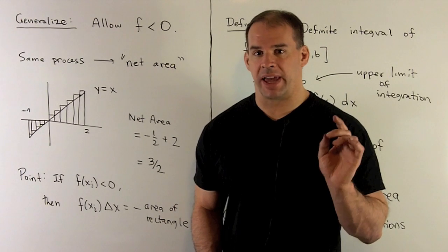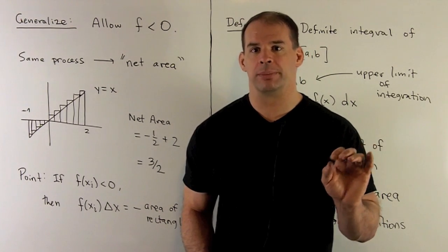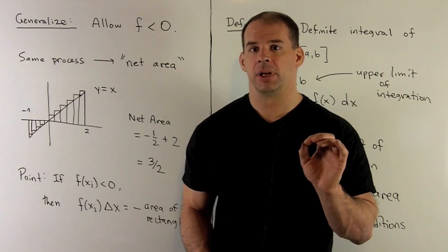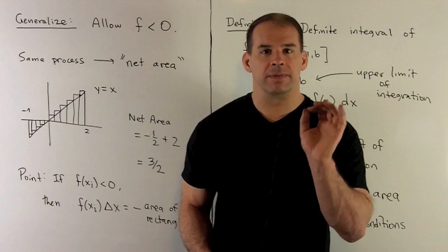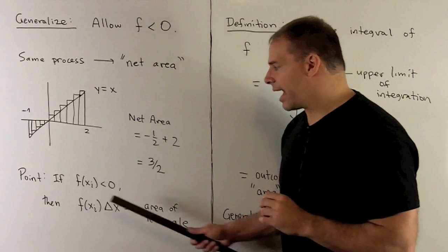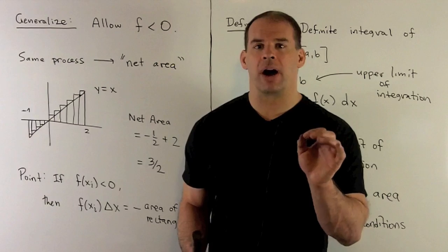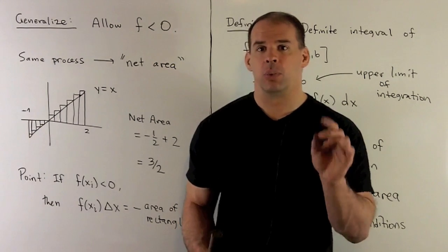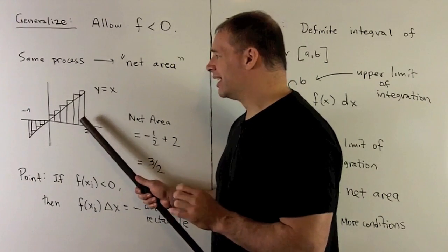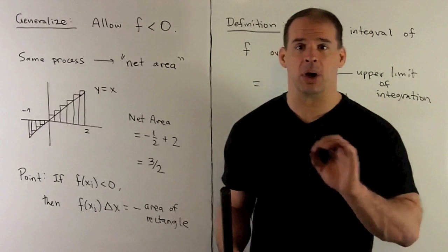Next, we're going to generalize our process to handle negative values of f. Same exact definition, same process — just going to push it through when we have negative f. The thing to focus on is the definition of the area of the rectangle: f(xᵢ) times Δx. If I'm at a point where f(xᵢ) is negative, the rectangle is now going to be pointing down, so it'll be below the x-axis.